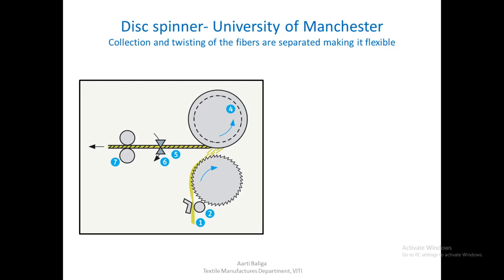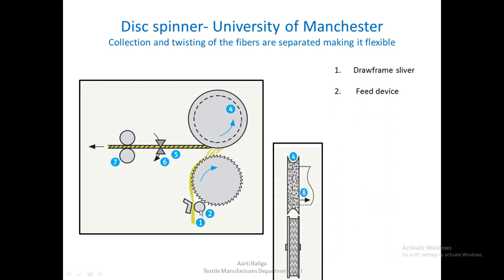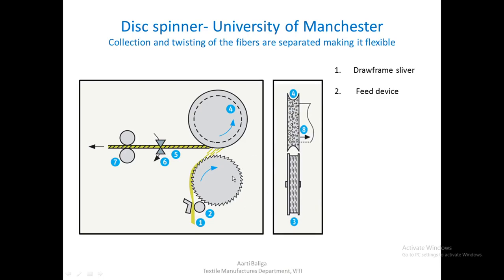The first element marked here is the drawframe sliver which is being fed. Two is the feed device — this is the side view of two rollers. Three is the opening roller shown as a side view of this disc. Four is the disc which is perforated. Five is the open-end yarn or seed yarn which is being fed here at the disc, kept in contact because of the vacuum created by element eight.